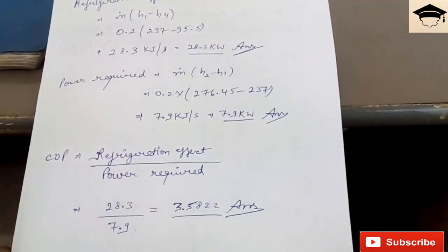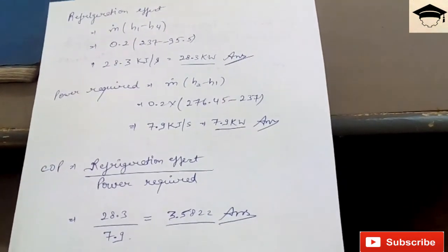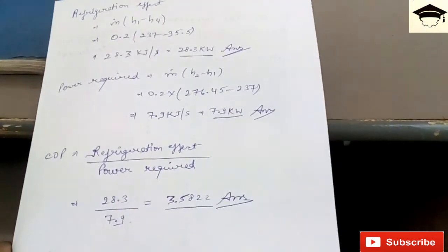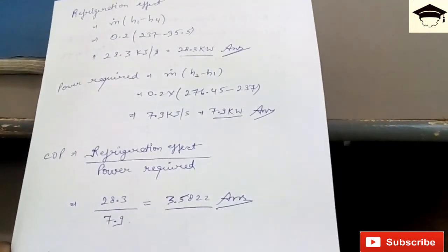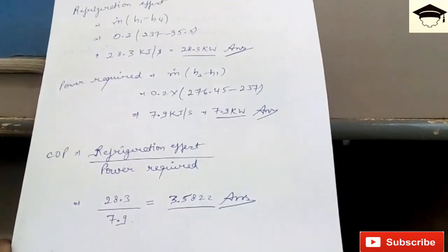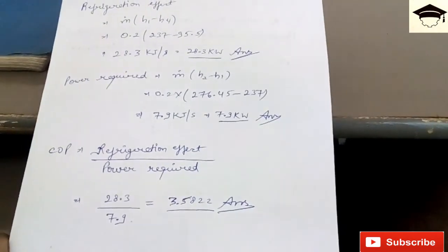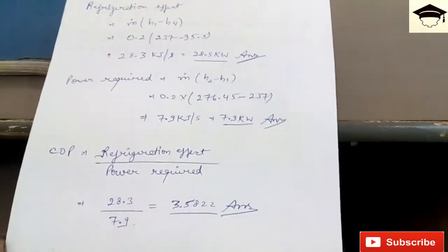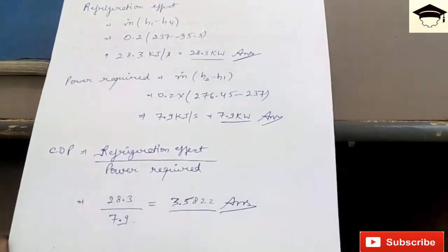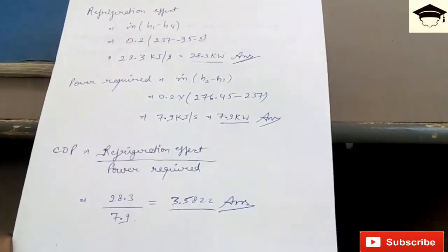Proceed in a similar manner. You can find out the points, take the corresponding values of enthalpy, that is h1, h2, h3, h4. If mass flow rate is given you multiply, otherwise you leave the answer in kilojoules per kg. You calculate the power required and the COP. These three are mainly asked in questions, whether it is GATE, IES, or any competitive exam like DRDO, ISRO, or your regular coursework of B.Tech.